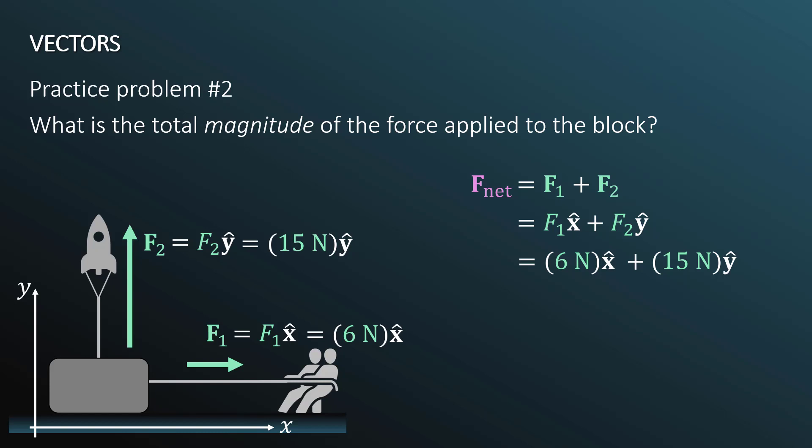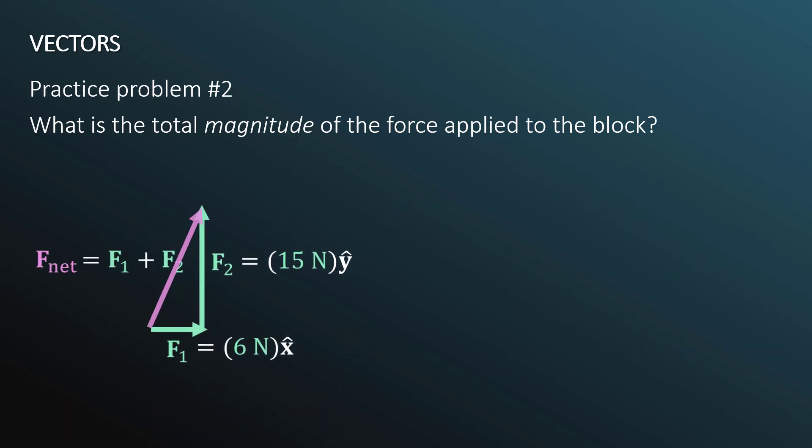But notice that they are in different directions. So what do we do with that? We see that the total force as a vector is 6 newtons in the x direction and 15 newtons in the y direction. If we were asked just for the total force as a vector, this would be the answer. But we've been asked for the magnitude of the force, which is a scalar quantity. So we have to do something else with these values.